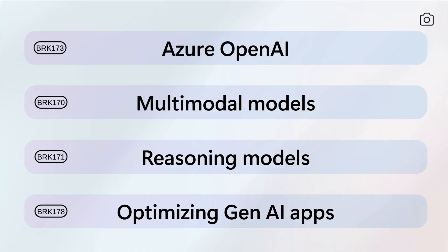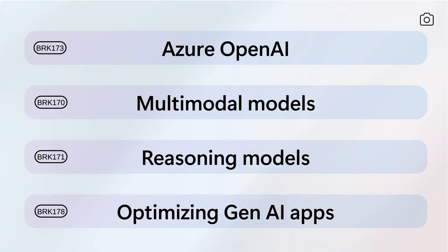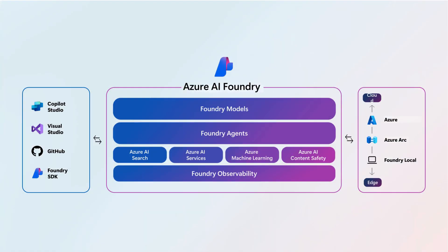Besides foundational models, the session moved into agents — the intelligent orchestrators of AI workflows within Azure AI Foundry. Agents coordinate multiple tools and models to perform complex tasks beyond what a single AI model or tool could do alone. In Azure AI Foundry, agents are smart orchestrators that dynamically control workflows by choosing and combining tools and AI models, handling processes like automatic document processing or multi-step problem solving. Positioned centrally in the architecture, agents collaborate closely with models and observability tools to create flexible and scalable AI applications.